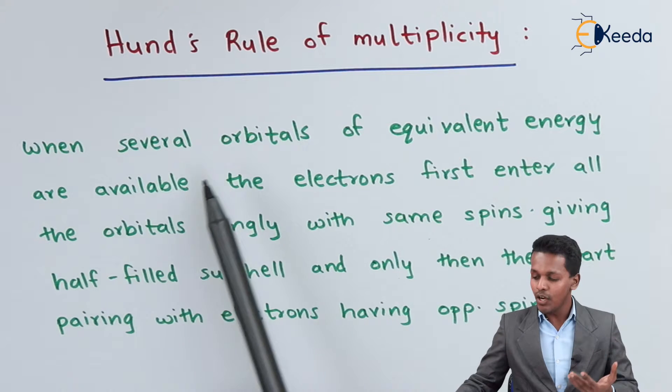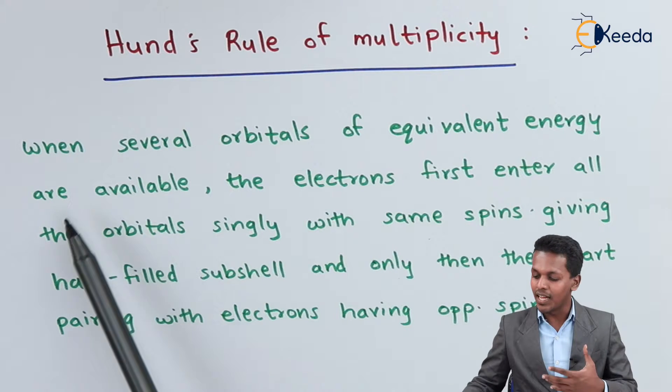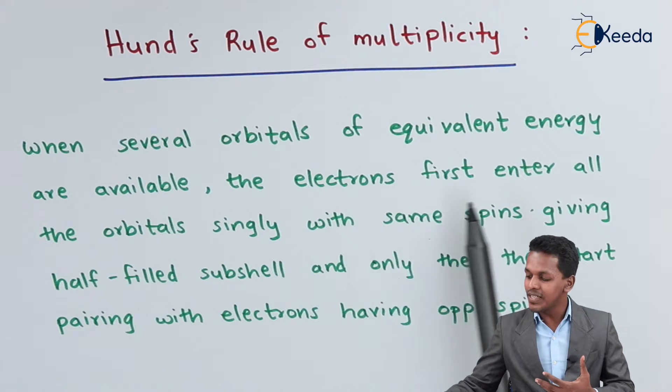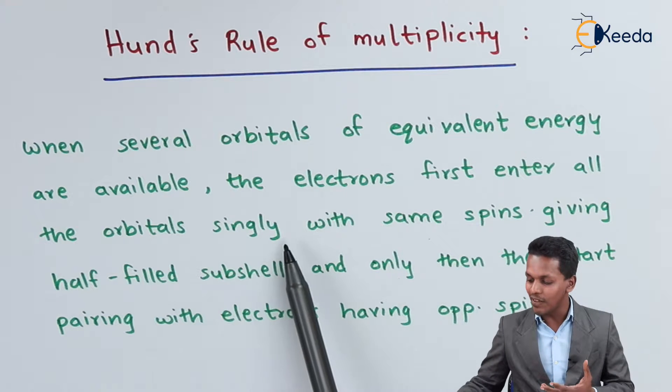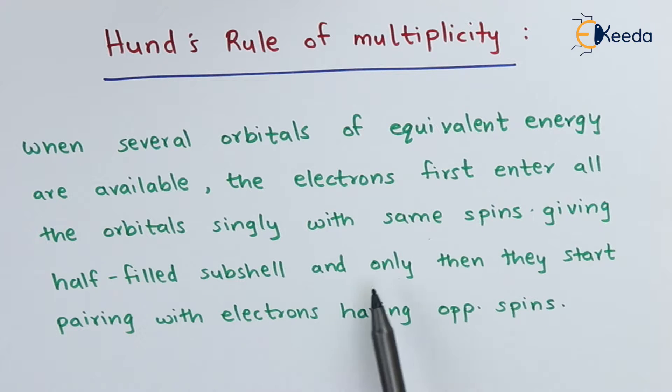When several orbitals of equivalent energy, that is the degenerate state, are available, the electrons first enter all the orbitals singly with same spin giving half-filled subshell, and only then they start pairing with electrons having opposite spin. So this is the statement and now let us understand this statement with the help of a particular example.